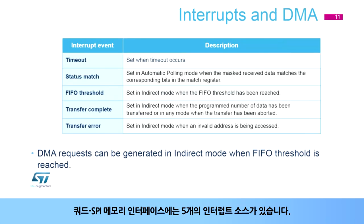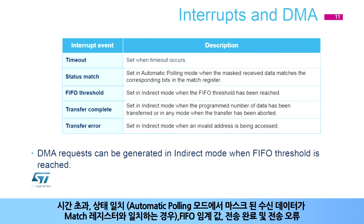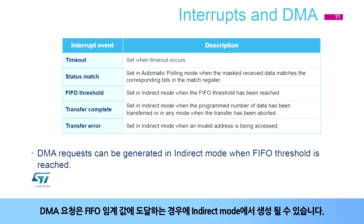The Quad SPI memory interface has five interrupt sources: timeout, status match — when the masked received data matches the corresponding bits in the match register in automatic polling mode — FIFO threshold, transfer complete, and transfer error. DMA requests can be generated in indirect mode when the FIFO threshold is reached.